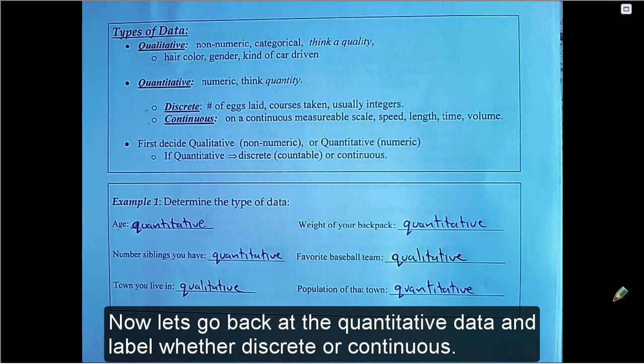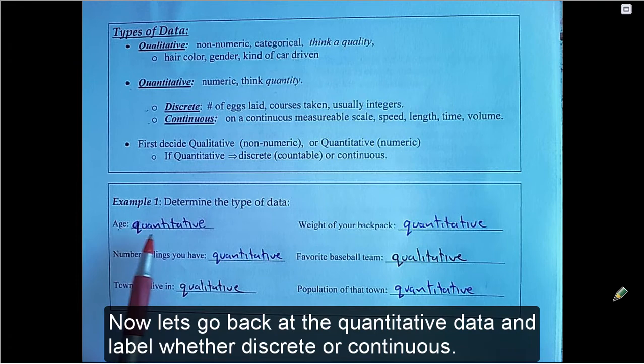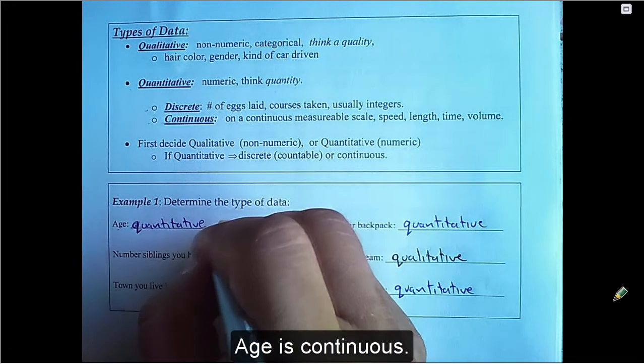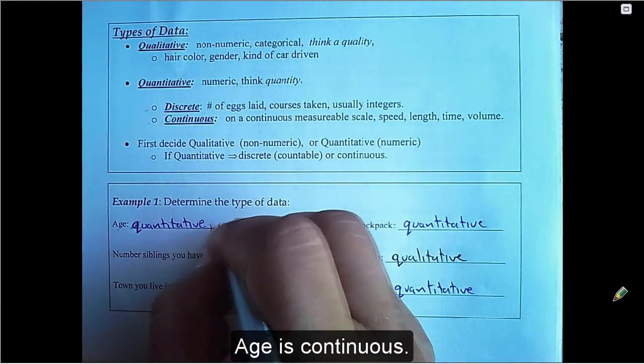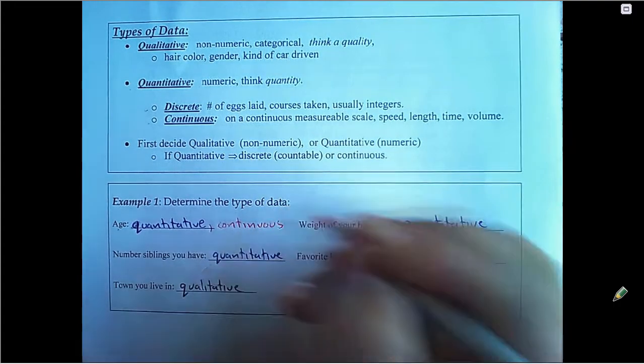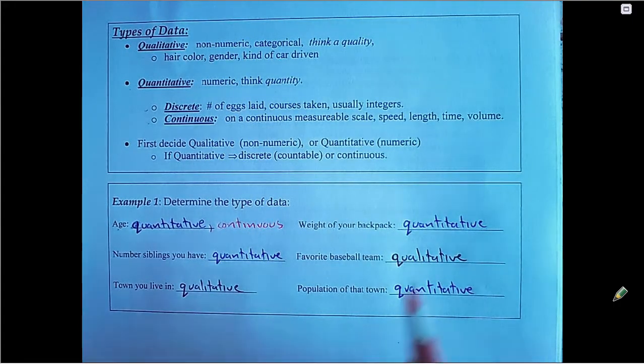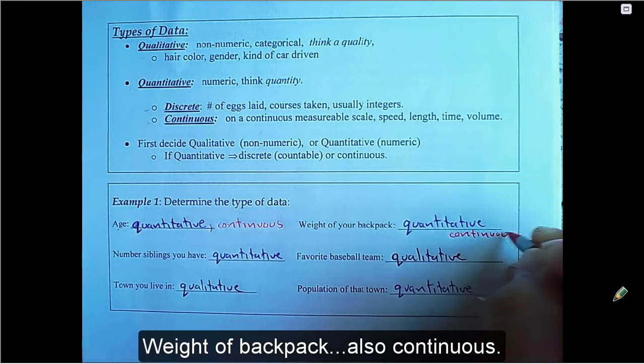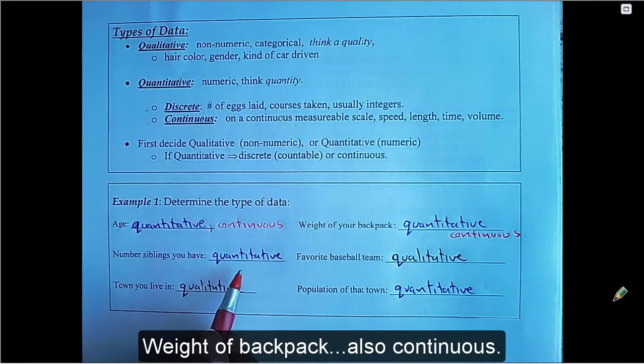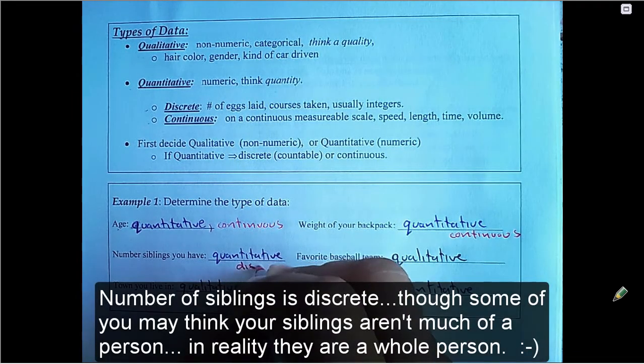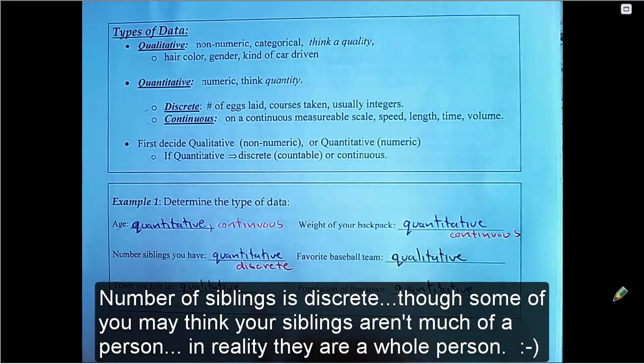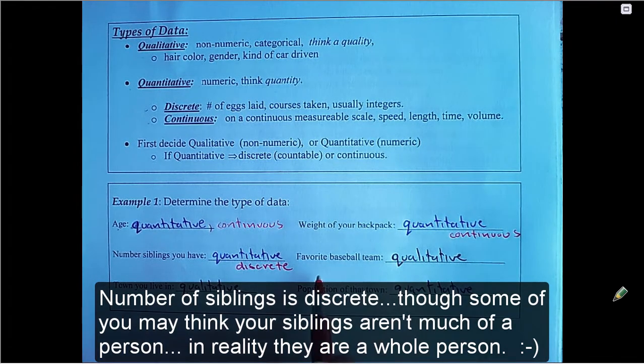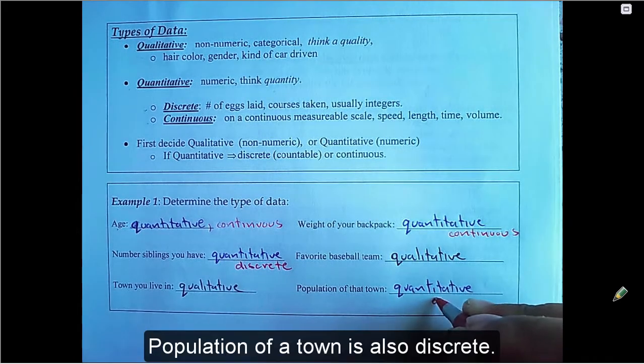Now let's go back at the quantitative data and label whether discrete or continuous. Age is continuous. Weight of a backpack, also continuous. Number of siblings is discrete, though some of you may think your siblings aren't much of a person. In reality, they are a whole person. Population of a town is also discrete.